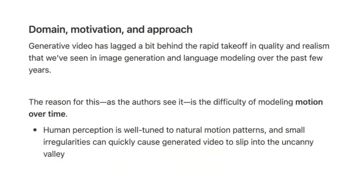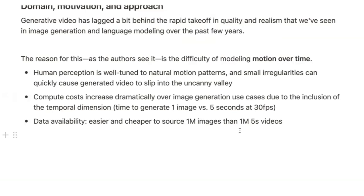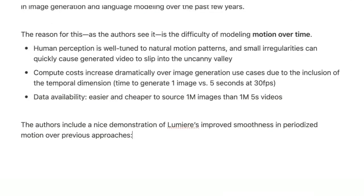One reason they give is that we as humans are super well-tuned to patterns of natural motion. Very small irregularities can seem freaky to us and push us into that uncanny valley — the Will Smith eating pasta video comes to mind as an extreme example. Things are not moving the way we're used to seeing them move. We also have issues with compute costs and data availability that are much steeper for video than for imagery, because a video is composed of a bunch of smaller images.